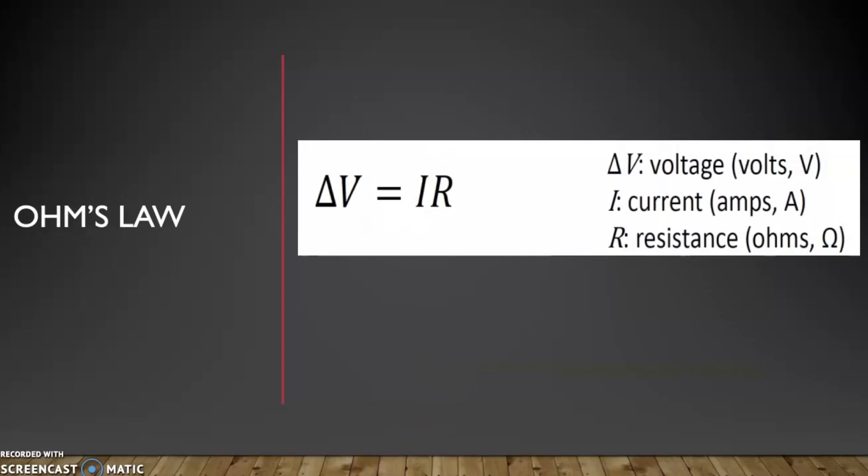That's what we're looking at. Now what's great about current is it helps us to complete Ohm's law. With Ohm's law, we are able to define voltage, and voltage is current times resistance. Now this is a linear relationship.